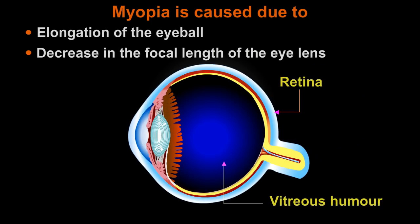Myopia is caused due to elongation of the eyeball, or decrease in the focal length of the eye lens.